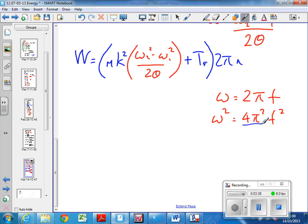So jumping a step, and we can have a look and see if you can see how this works. The work done equals mk squared, and then we've got times—whoops, not 2 pi—4 pi squared, open bracket, f2 squared minus f1 squared over 2 theta.